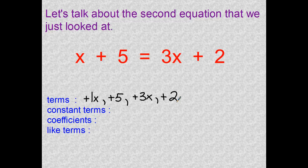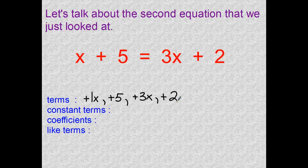Now let's talk about those four terms differently. A constant term is the term that does not have any variable attached to it — not attached by multiplication, no fraction bar or division sign. Constants are just those integers you see without a variable. The first constant is 5 and the second constant is 2 — no variables attached in any way.